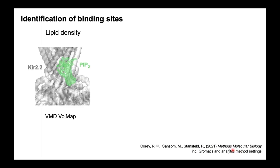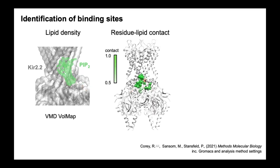Once we've run our simulations, we want to identify binding sites from the data. One method is to calculate the density of your lipid of interest around the protein using a tool such as the Volmap tool in VMD — analogous to getting density from a structural dataset — which can identify what looks to be a nice binding site for this lipid. Another way is to quantify the interaction likelihood between your lipid of interest and the residues on the surface of the protein, then colour the residues by contact frequency. Green residues with high contact likelihood suggest a binding site.